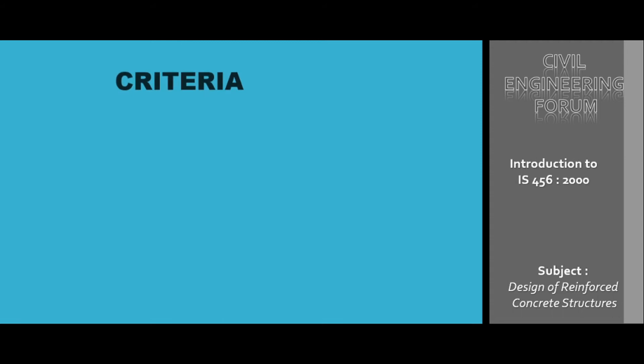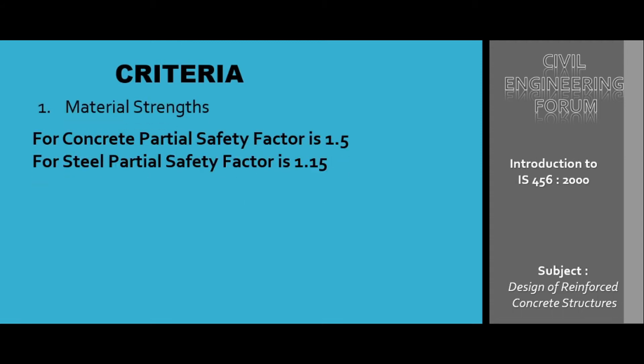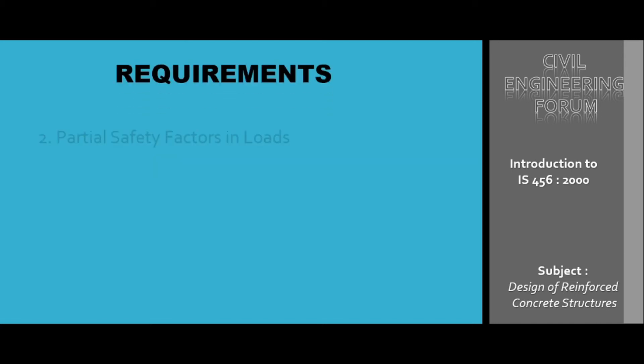Now we will see the criteria for partial safety factor for materials like concrete and steel. For concrete, the partial safety factor is 1.5, and for steel, the partial safety factor is 1.15. These figures are according to Indian Standard Code 456:2000, given on page number 68. This concludes the discussion on material strength, and now we will talk about load partial safety factor.